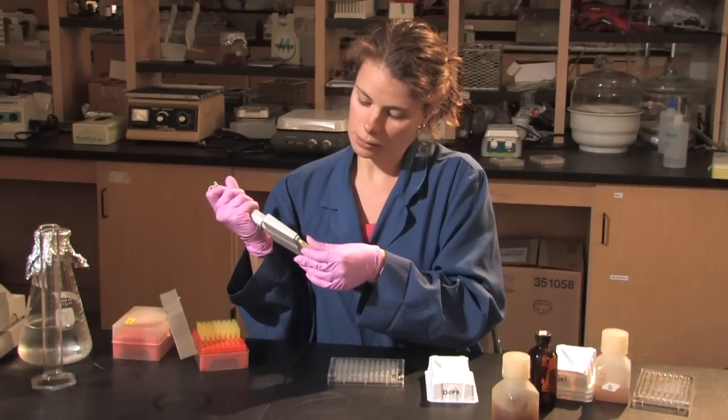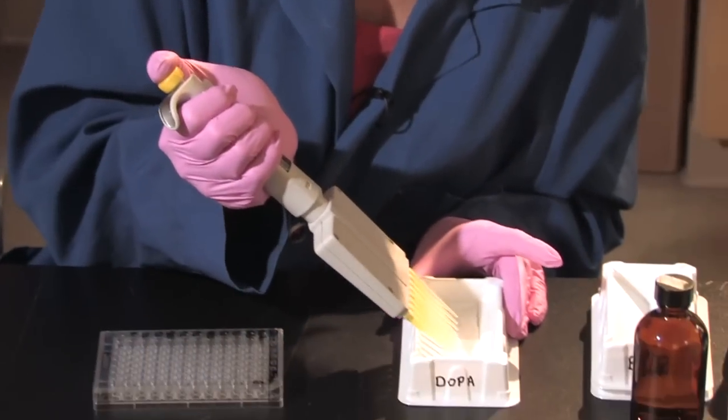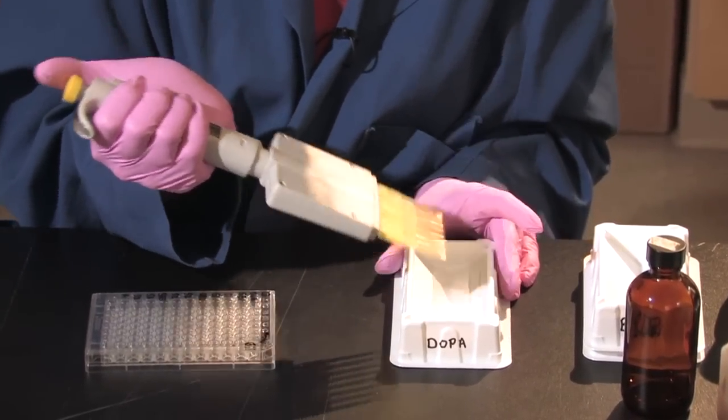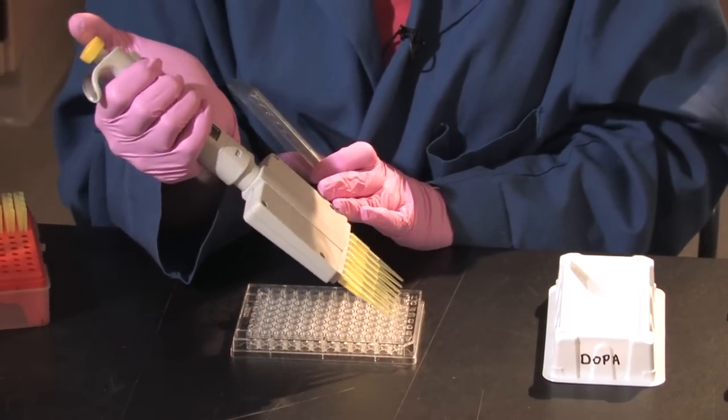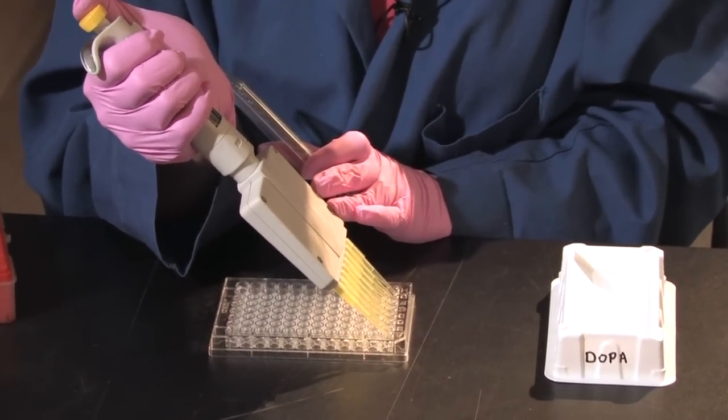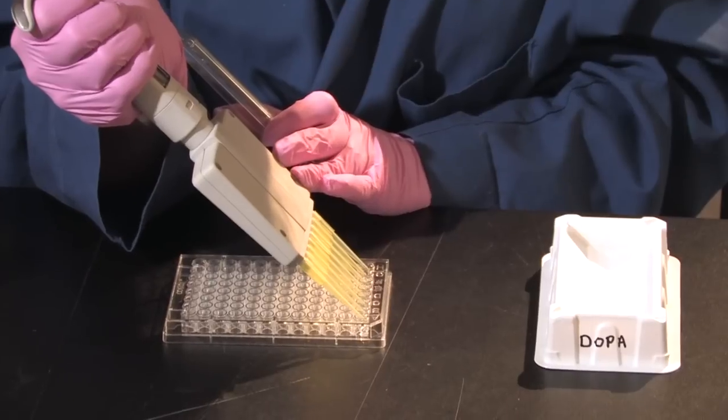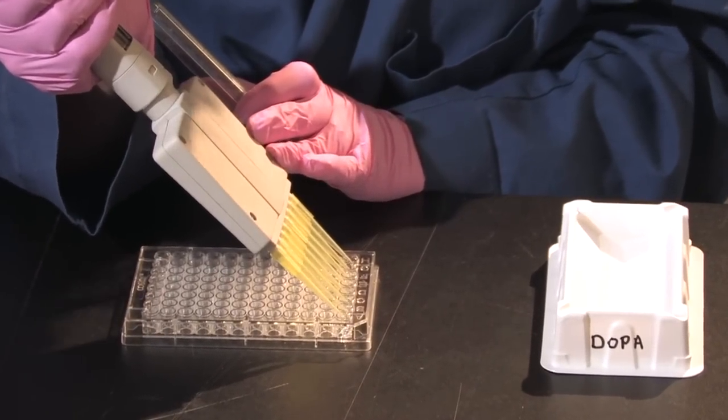I'm going to add 50 microliters. I want any color that comes afterwards to be due to the enzyme, the phenyloxidase acting on the DOPA and not the DOPA itself. So I add 50 microliters to each of the wells within the row.